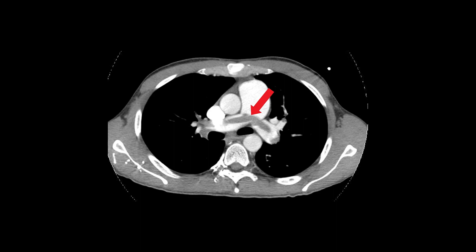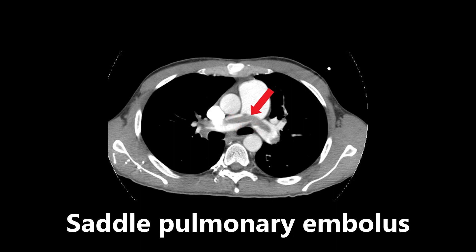Next we have a CT scan with a lovely arrow sign. What we're looking at is quite serious — it's an example of a saddle pulmonary embolus. This is a blood clot right in the large vasculature of the lungs. This can be very life-threatening and is definitely something that should not be there. It is a saddle pulmonary embolus.